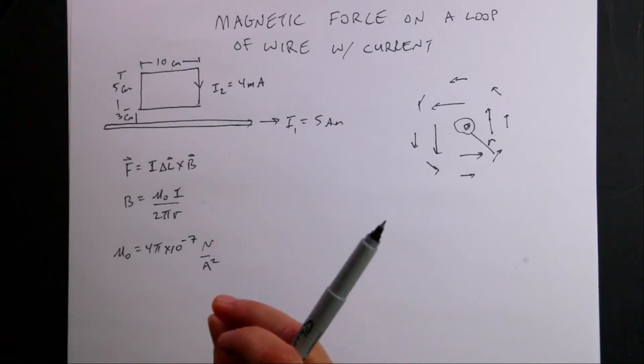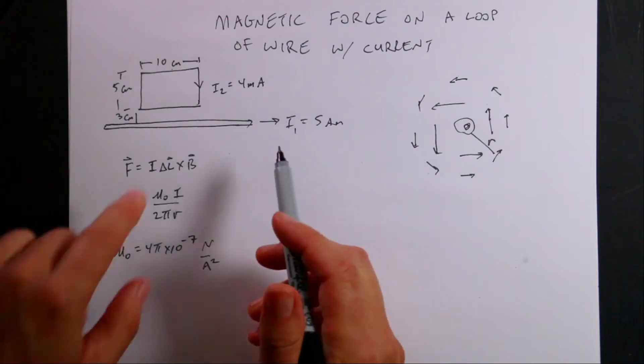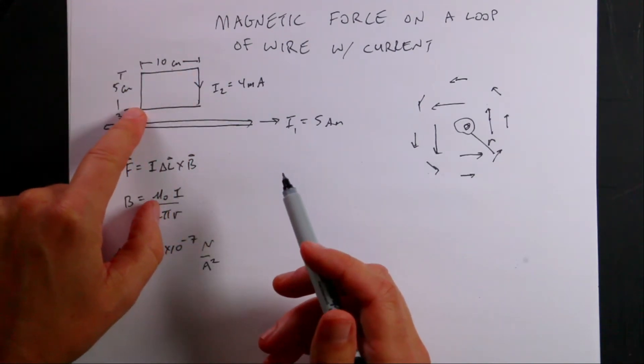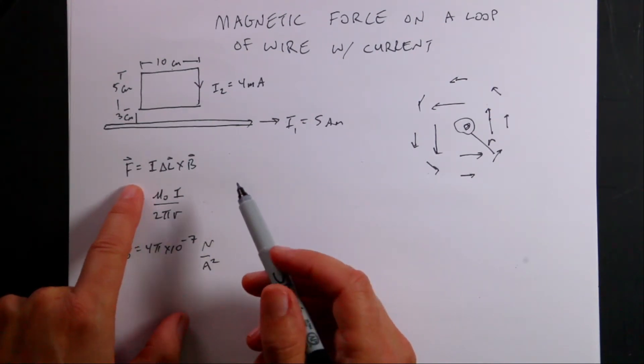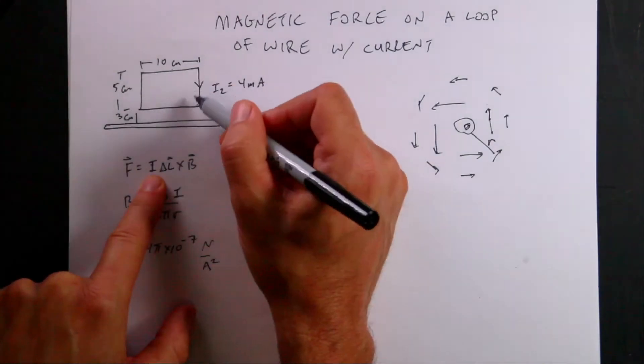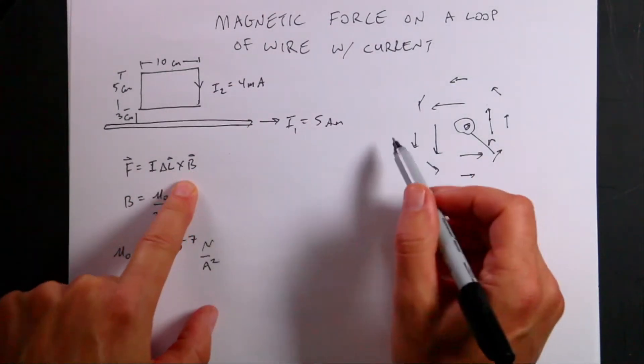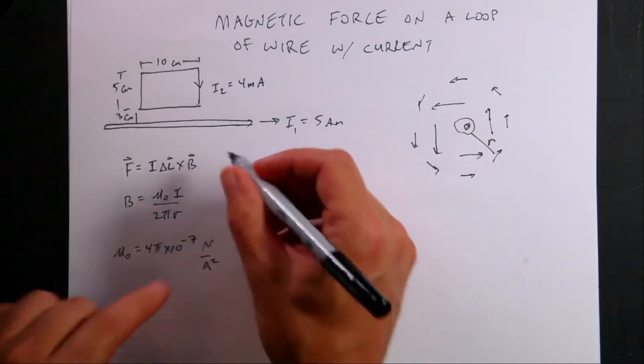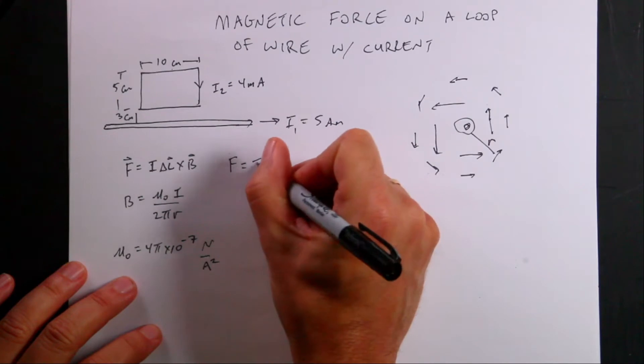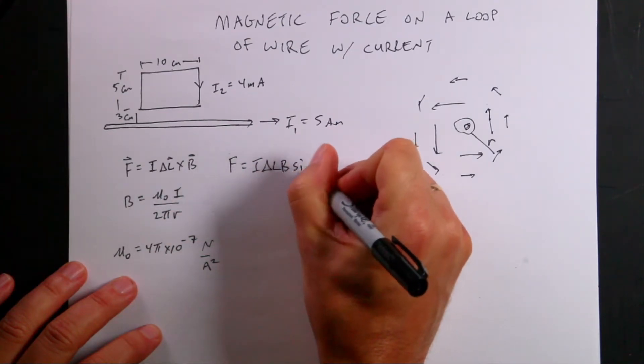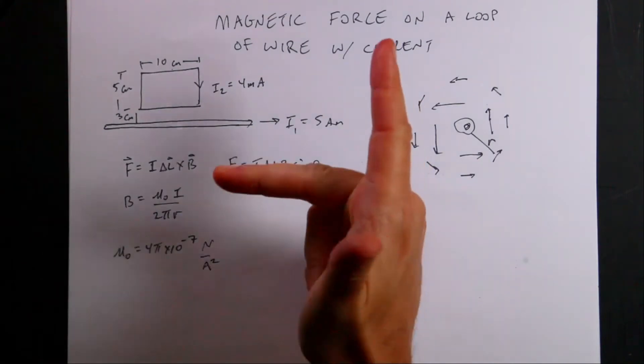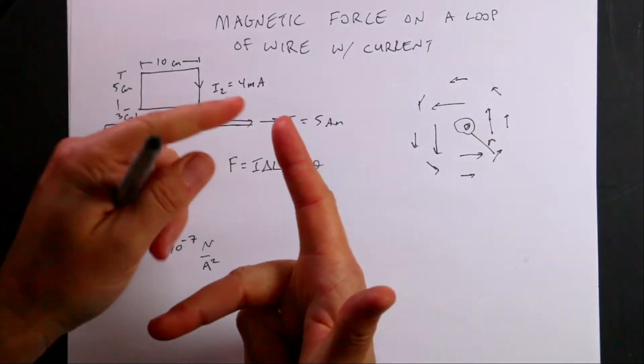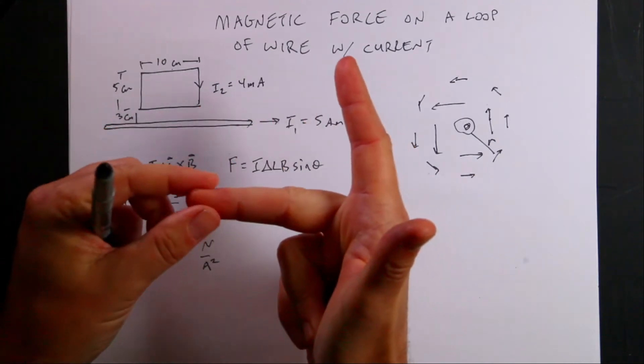Now I want to find the value of the force on the different wires. So I need a different equation for that. This is the expression for the force on a wire. This is a cross product. So the force is the current in this wire times its length across the magnetic field due to the other wire. So I can write the magnitude of this as F equals I delta L B sine theta. And then the direction I can use the right hand rule.